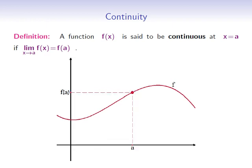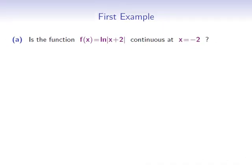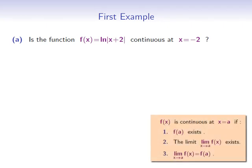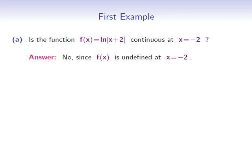Now let's move on to our first example. This example has three parts. Part a: is the function f of x equals natural log of absolute value of x plus 2, continuous at x equals negative 2? To answer this question, remember the three conditions. The first condition is f of a must exist. In our case, a is negative 2, and f of negative 2 will be undefined as the natural log of 0 is undefined. So the answer will be no — f of x will not be continuous at x equals negative 2 since it is undefined at that point.